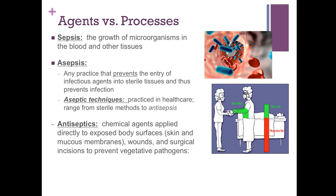These next three terms can be confusing, so let's point out the differences. Sepsis is when we have growth of microorganisms in the blood or other tissue — an active infection. Asepsis is a practice that prevents the entry of infectious agents into sterile tissues, preventing infection. The 'a' prefix means 'without,' so asepsis means without the growth of microorganisms in blood and other tissues.